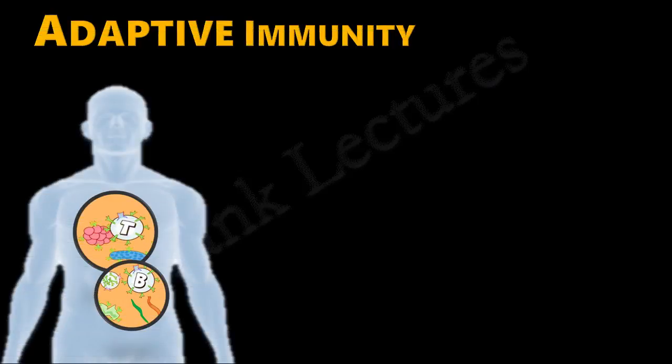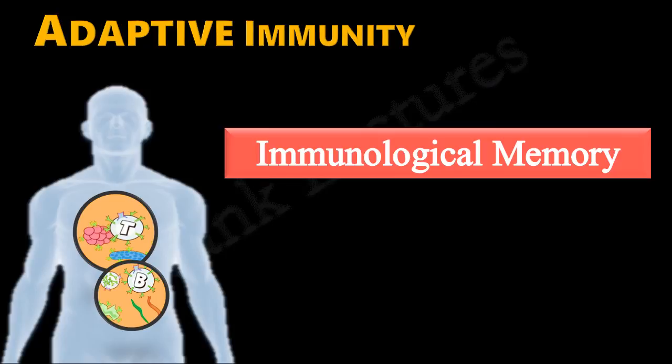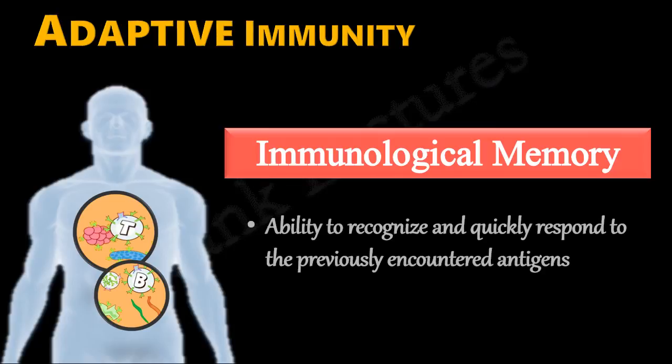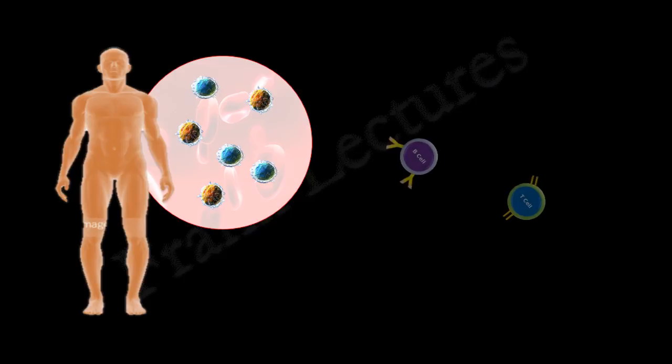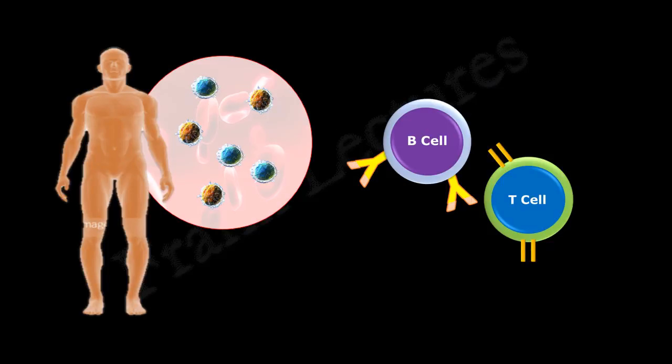One of the most important features of adaptive immunity is immunological memory. Immunological memory is the ability to recognize and quickly respond to a previously encountered antigen. Naive B and T lymphocytes are present throughout our body, each equipped with unique antigen receptors. What happens when an antigen is encountered by the adaptive immune system for the first time?